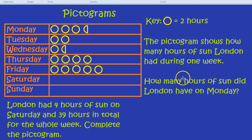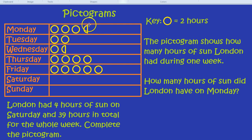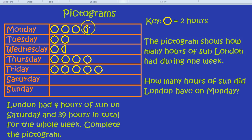So let's work out this question. How many hours of sun did London have on Monday? Well, this first circle is two hours and the second circle is two hours, so that's four. Then six for this circle. This half circle is half of a full circle, so it represents one hour. So if you add those six hours here plus the one hour from this semicircle, you get seven hours.